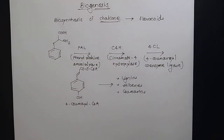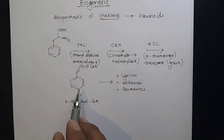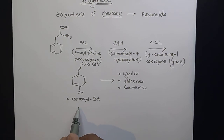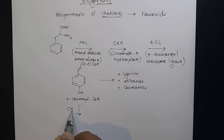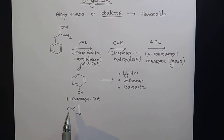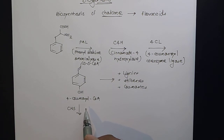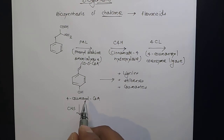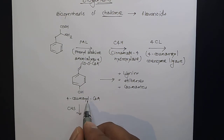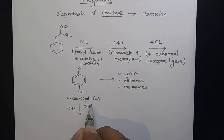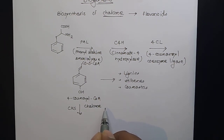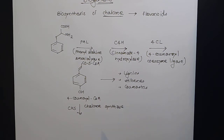Using this same intermediate, today we have to prepare the chalcone, and for that we have to use CHS. CHS is an enzyme — the full name of CHS is chalcone synthase.